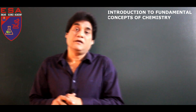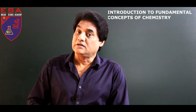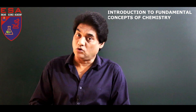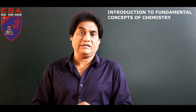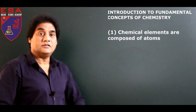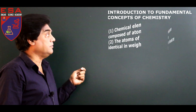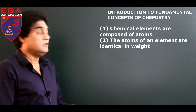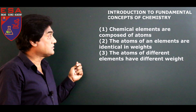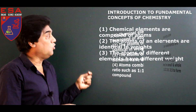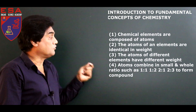Dalton believed matter is composed of atoms — indivisible particles. John Dalton's atomic theory rested on four basic ideas: chemical elements are composed of atoms; the atoms of an element are identical in weight; the atoms of different elements have different weights; and atoms combine in small whole-number ratios such as 1:1, 1:2, 2:1, or 2:3 to form new compounds.